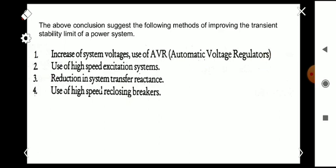Some methods of improving the transient stability limits of a power system: First, increase of system voltages using Automatic Voltage Regulators (AVR). Second, use of high speed excitation systems. Third, reduction in system transfer reactance. Fourth, use of high speed reclosing breakers.